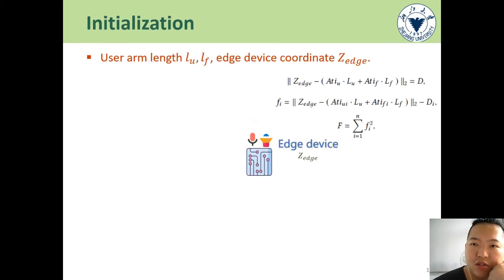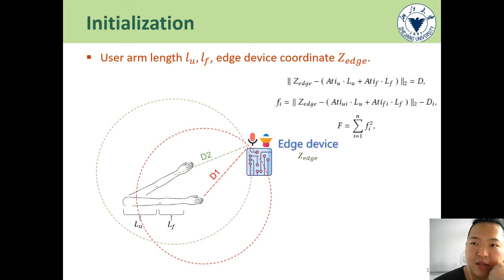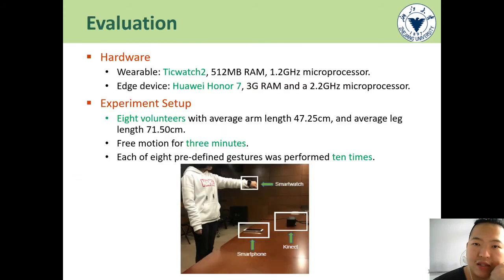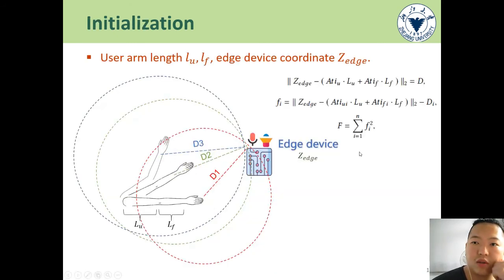Using LimbMotion in practice requires some parameters such as the user's upper arm length Lu, forearm length Lf, and the edge device coordinate Zedge. To make it convenient, we design an automatic initialization method to get these parameters. We ask the user to swing the arm first in an extended manner, then in a bent manner. According to 3D geometry, it forms a non-linear optimization problem that can be solved.